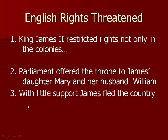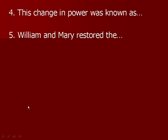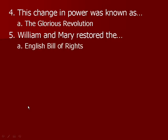King James II started to restrict rights, not only in the colonies but also in England. By restricting rights, the people were unhappy with parliament in England, so parliament offered to remove James and offer the throne to his daughter Mary and her husband William. With little support, James looked around and decided he would die if he stayed, so he left. This change in power is known as the Glorious Revolution.